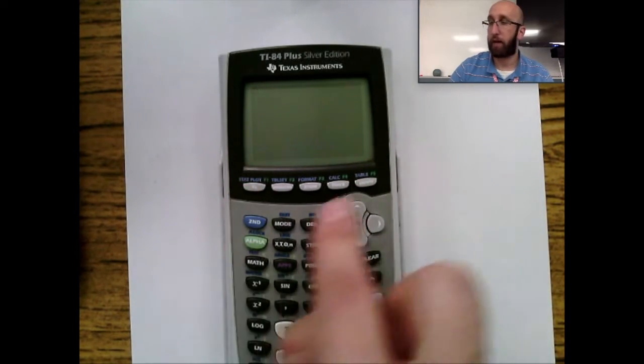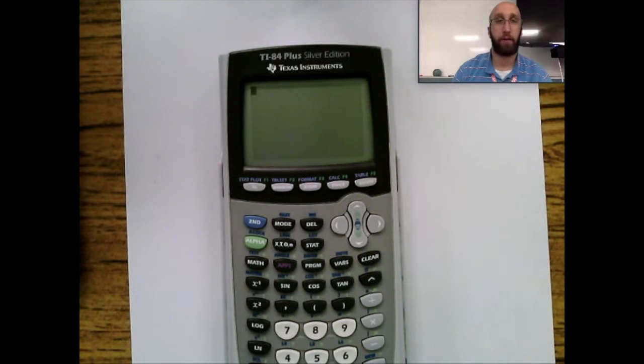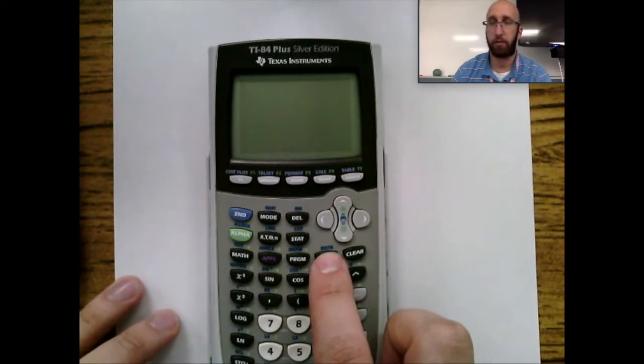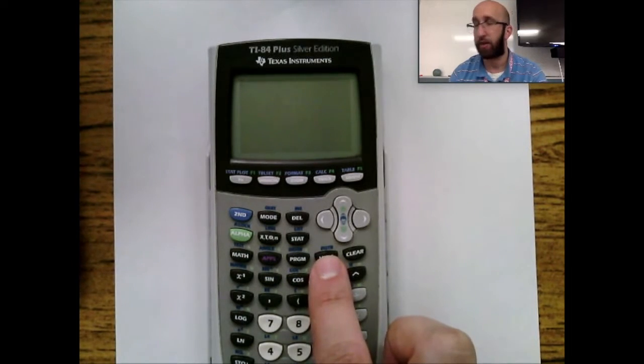So again, have your data in STAT Edit, STAT PLOT, GRAPH it, ZOOM STAT will find that data. The final button I would look out for—pretty rare, it's over here under VARS—but it's right here in blue. It says, I know it's kind of far on the screen, it says DISTR. That's Distribution. You hit 2nd Distribution.